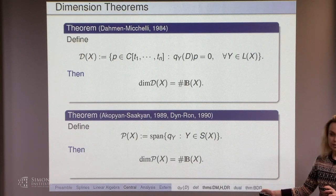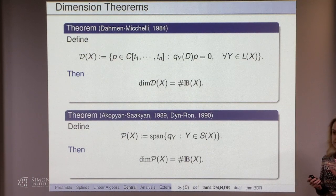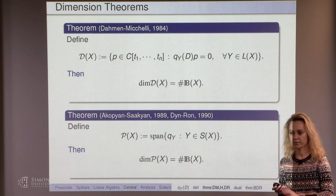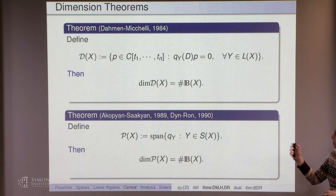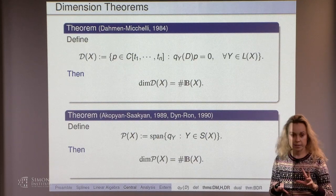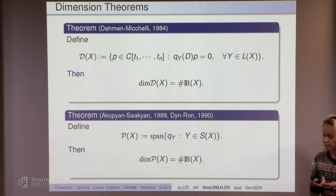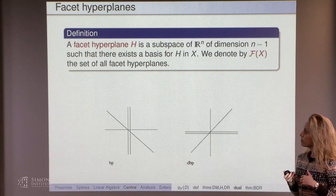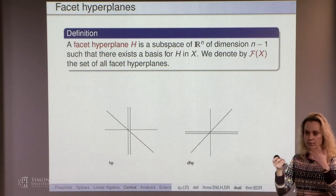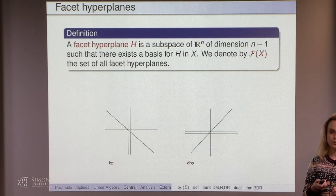There is another space P given by taking the span of all short homogeneous polynomials. The polynomial q_Y is the product of linear forms coming from sub-collection Y. If you take all the short subsets and take their span, you get another finite-dimensional linear subspace, and its dimension is also equal to the number of bases. Moreover, there is a natural duality between P and D playing a role here — D is not P generally, but there is a magic duality between them. This second statement is due to two teams: Akkopyan and Saikan, and Din and Ron, done in 1989 and 1990. That started this whole area.